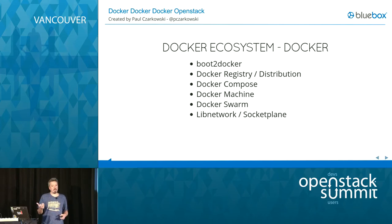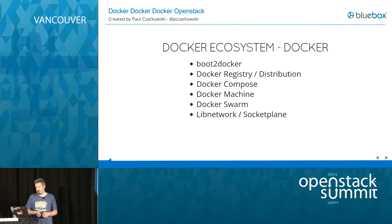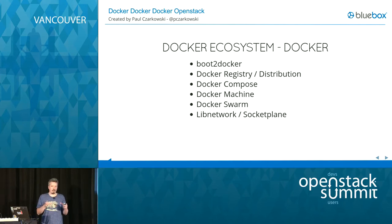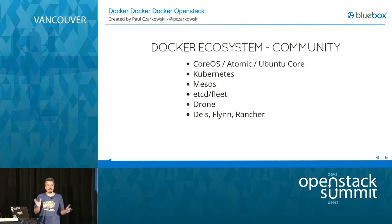Docker Machine spins up machines capable of running Docker externally — for example on an OpenStack cloud. You point it at your OpenStack node, give it your credentials, and it spins up a VM, installs Docker, and creates an SSH tunnel so you can talk to the Docker API on the remote machine without exposing it to the world. Docker Swarm is fairly new, doing scheduling of Docker containers across multiple machines. Libnetwork is brand new — they acquired Socket Plane and are bringing in SDN support via Open vSwitch.